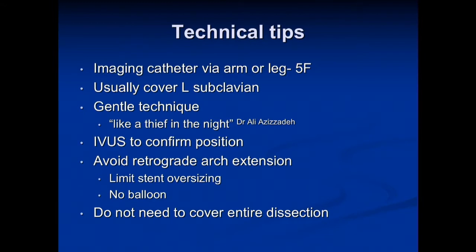We try to avoid retrograde arch extension when doing these procedures. To do that, we limit stent oversizing and do not balloon as we would in standard EVAR or TEVAR for aneurysm. It's important to recognize that you do not need to cover the entire dissection — doing so unnecessarily extends the repair and increases the risk to the spinal cord.